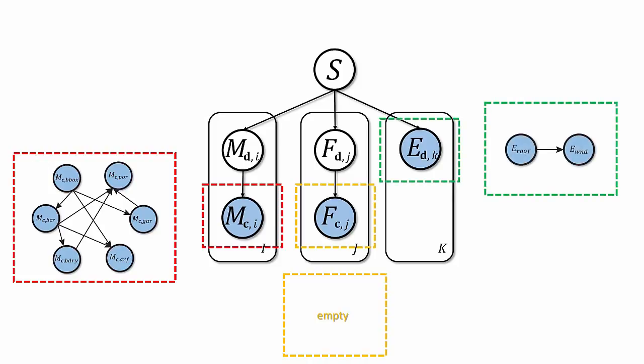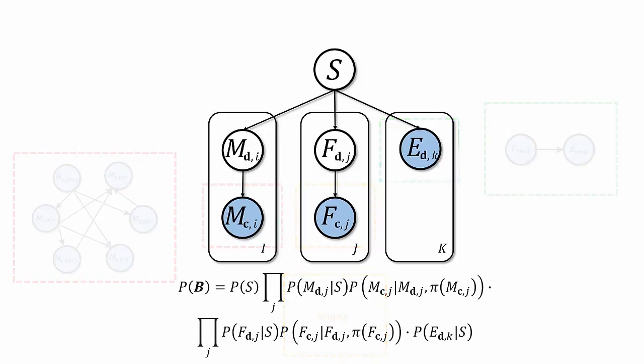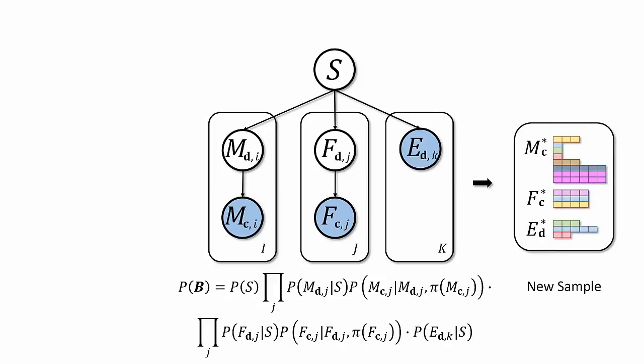In the element attributes category, we learned one edge between roof style and window style. After training, the graphical model describes the joint distribution of building attributes factored as a product of conditional probability distributions. Finally, we can sample the building attributes from the trained probabilistic graphical model.